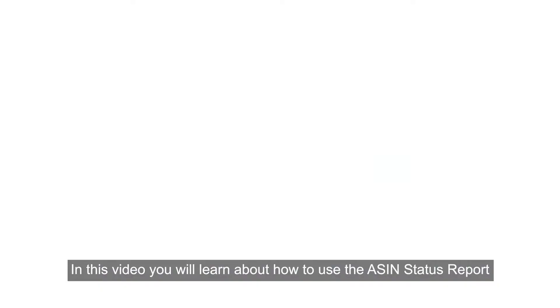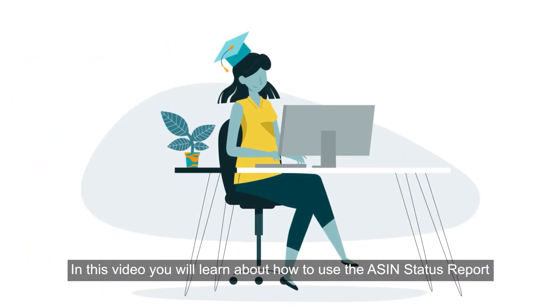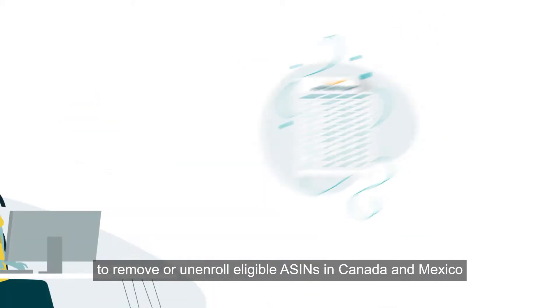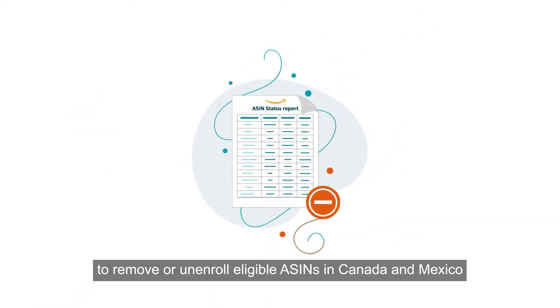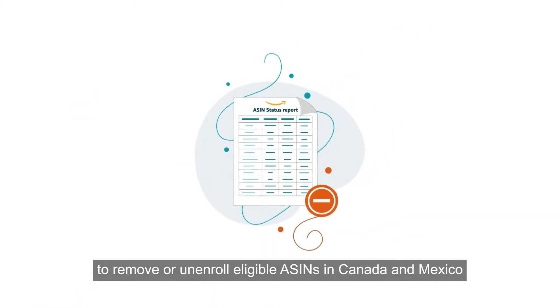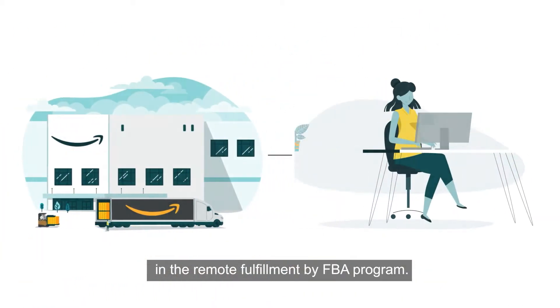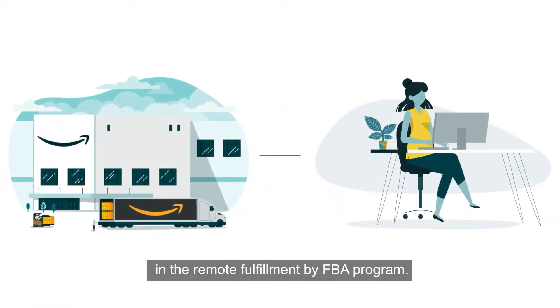Welcome. In this video, you will learn about how to use the ASIN status report to remove or unenroll eligible ASINs in Canada and Mexico in the Remote Fulfillment by FBA program.